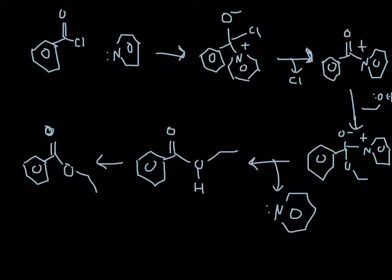In the first step, the pyridine will attack the benzoyl chloride, and the electrons will move up to the oxygen, forming a tetrahedral intermediate.